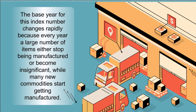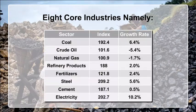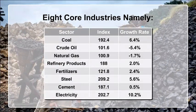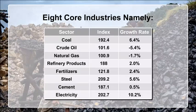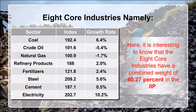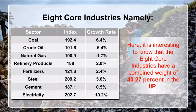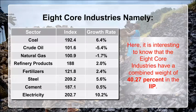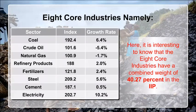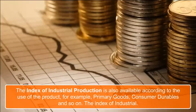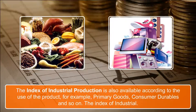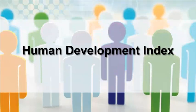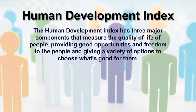Core industries — namely coal, crude oil, natural gas, refinery products, fertilizers, steel, cement, and electricity — are the main branches of the IIP. The 8 core industries have a combined weight of 40.27% in the IIP. The IIP is also available according to the use of the product, for example primary goods, consumer durables, and so on.